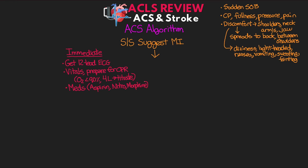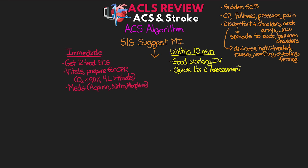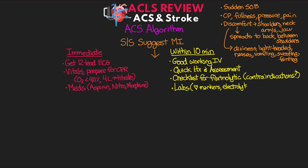Next are the things you want to be doing concurrently — they can come after the first three, but should be done within the first 10 minutes. These include ensuring you have good working IV access, performing a quick history and assessment, reviewing the checklist for fibrinolytic therapy and checking for any contraindications, getting blood for lab samples to check cardiac markers, electrolytes, and coags. Finally, get a stat chest x-ray — this most likely won't happen within 10 minutes, so they recommend it be completed within 30.